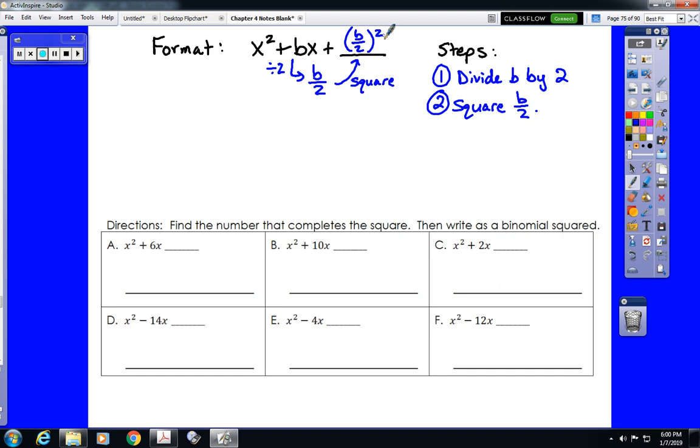Now in the process, we will figure out that this value, b over 2, is what's going to go into our binomial squared when we factor the left side of the equation. So the directions here in this section say find the number that completes the square. In other words, they want you to fill in this blank at the end of the trinomial. Then they want you to write this problem as a binomial squared.